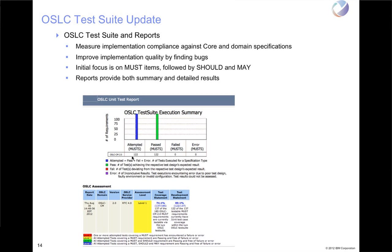The initial focus has been on must items in the spec, and then we're going to follow it up with coverage of the should and the may items. We do have reports available — it takes some customization, and there is a Word document that talks about how to get the reports up and running. When you have them running, they provide both summary and detailed results. You can also work from just the JUnit results in the Eclipse workspace.